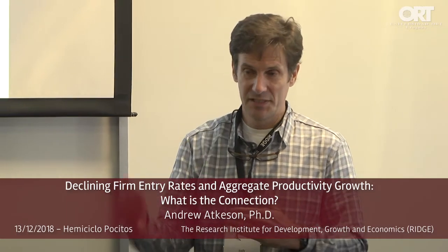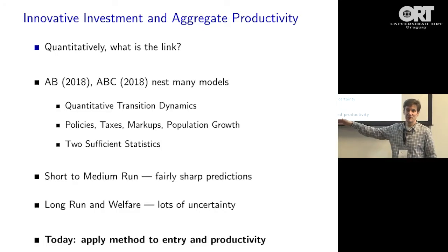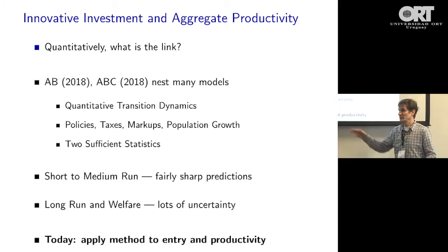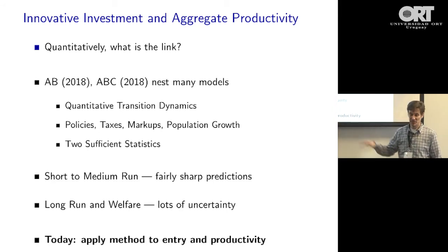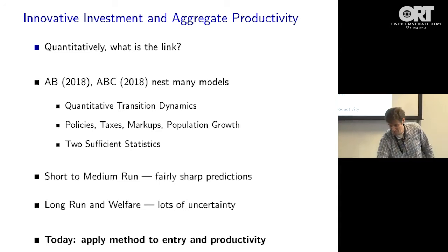If you do a policy experiment — say, we're going to change R&D subsidies by a certain amount — you need to know the whole model to understand how much a firm will change their investments in innovation. But if you take it as given that you want to do an accounting about the past — we have seen a decline in firm entry of a certain size — then perhaps we don't have to know the full model to say what the corresponding change in productivity is. That will be an advantage and will hopefully simplify what I'm trying to do today.